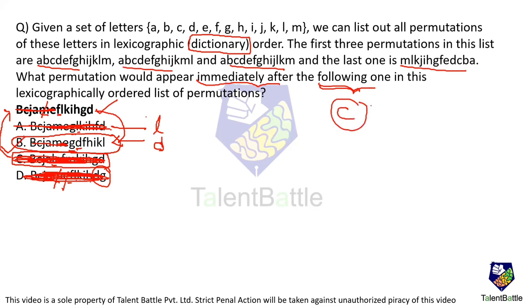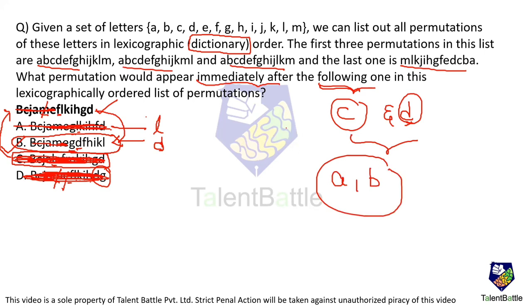So what we did? We eliminated Option C and Option D by using the dictionary manner, because both are preceding our word. Then we are left with Option A and B, which will definitely follow our word because both are starting with G while our word has F. In this two, B will come first according to alphabetical order. They ask us immediately followed, so our answer is Option B.